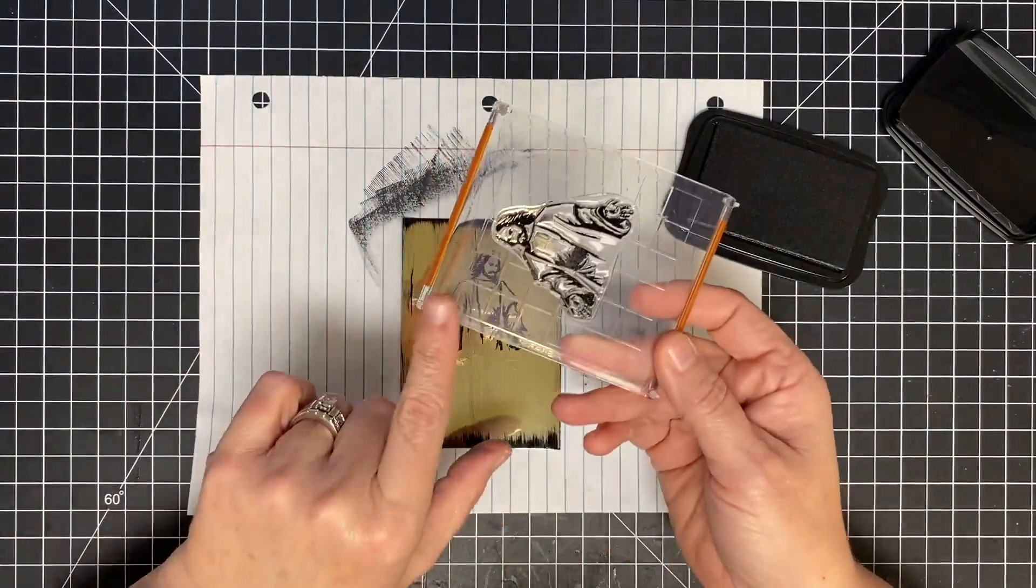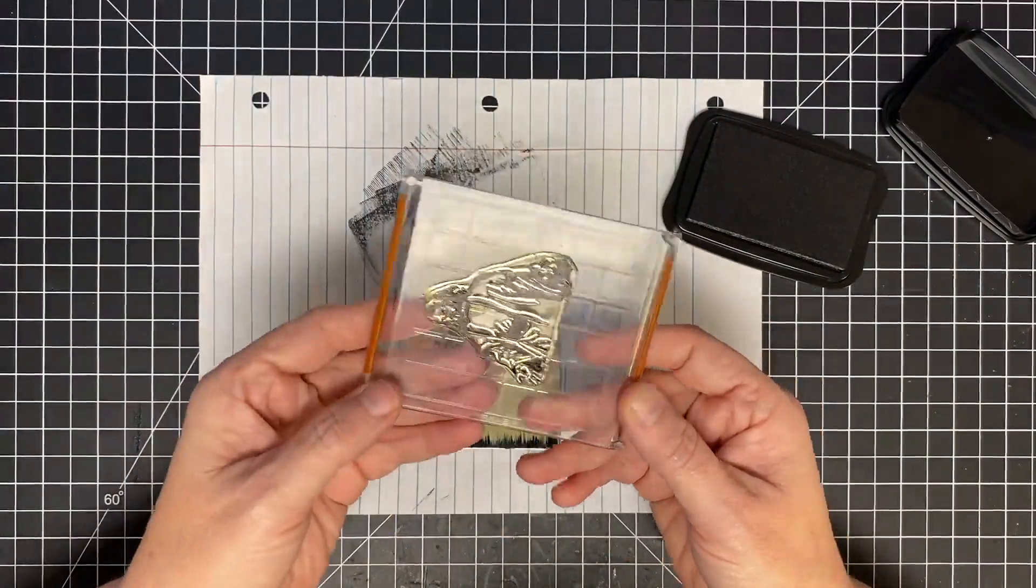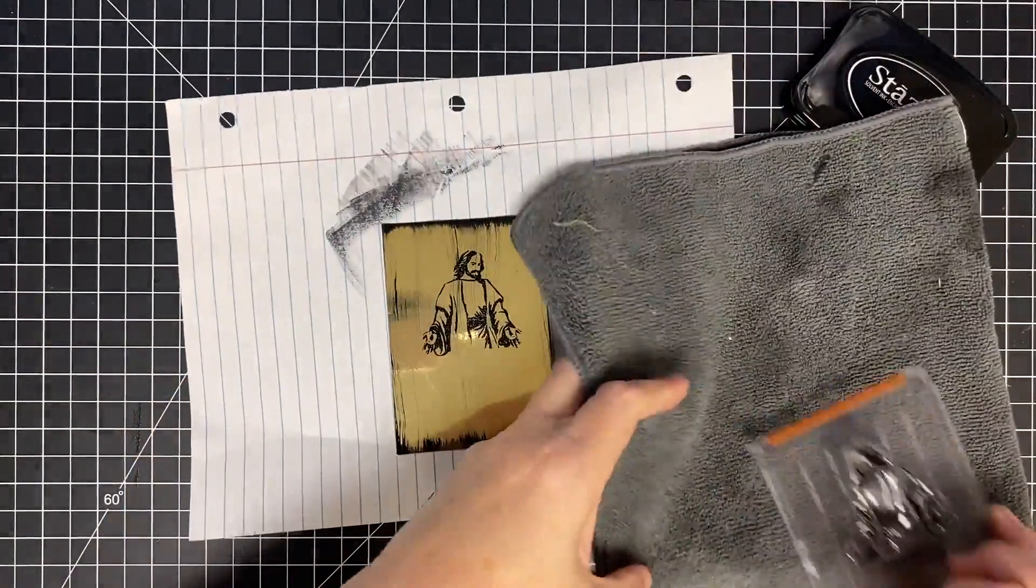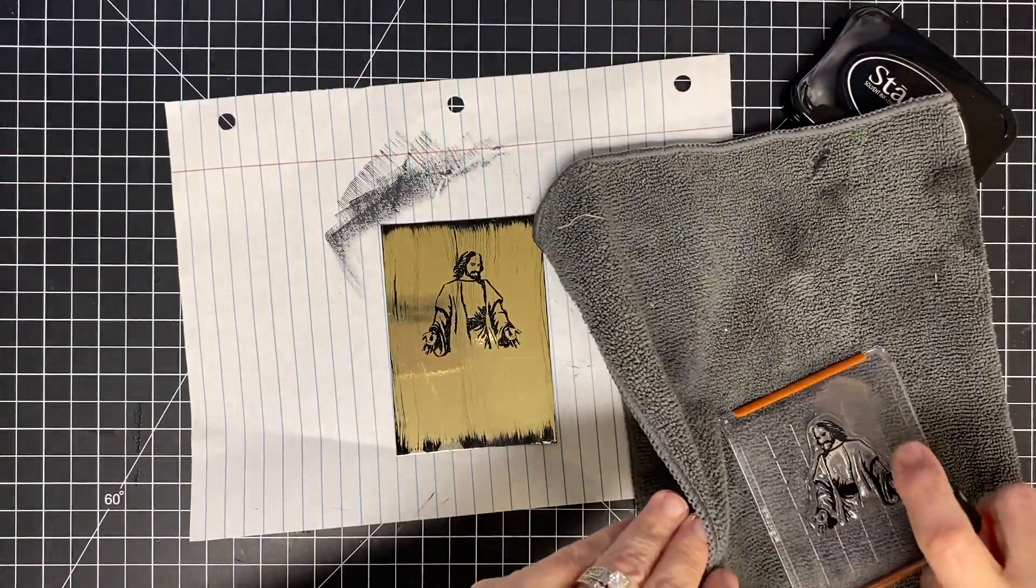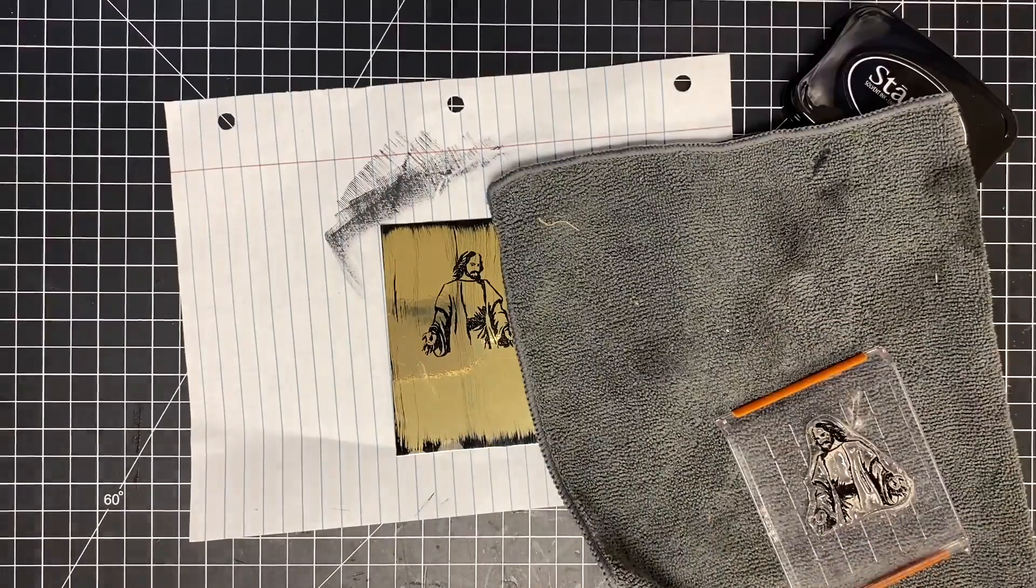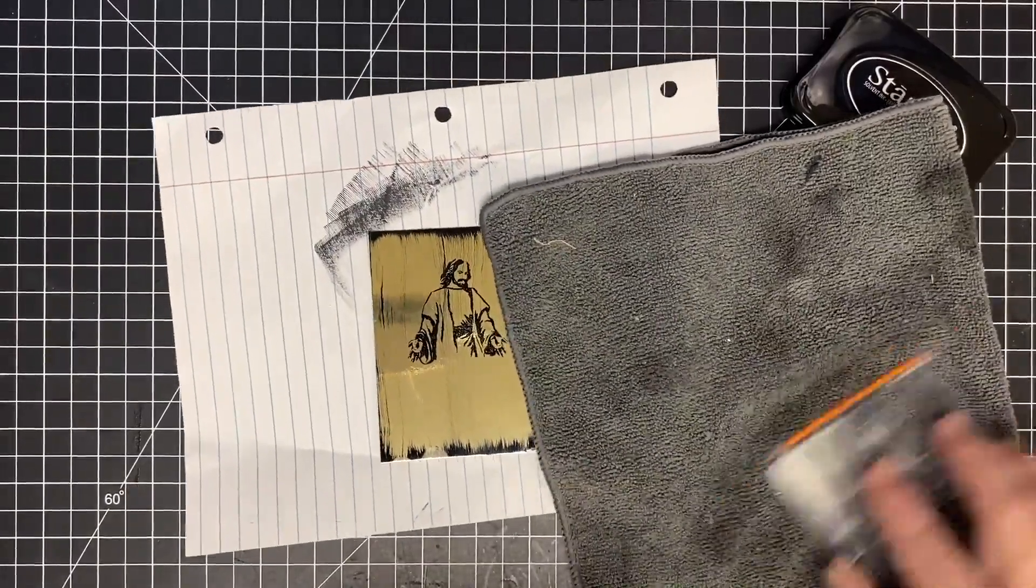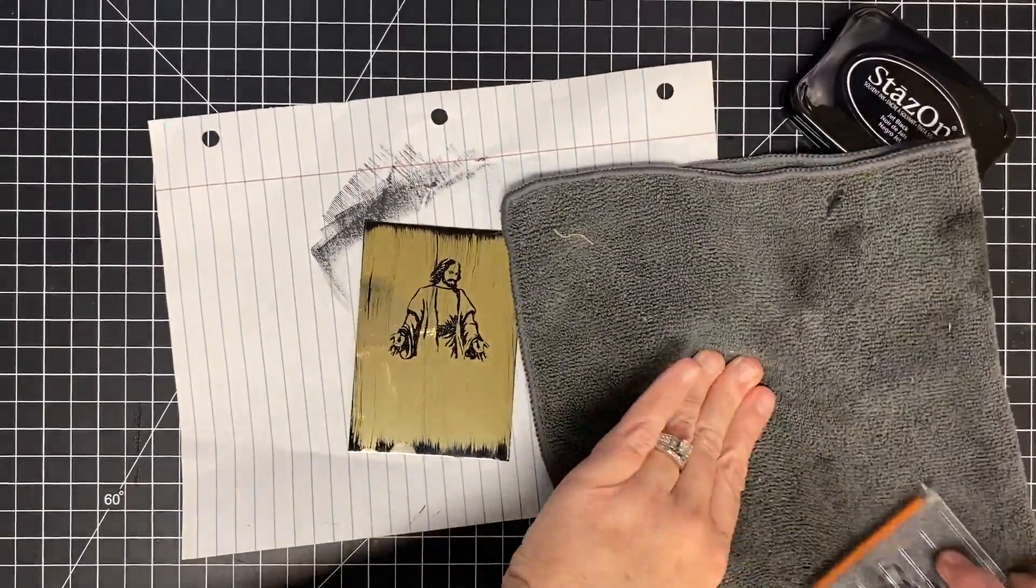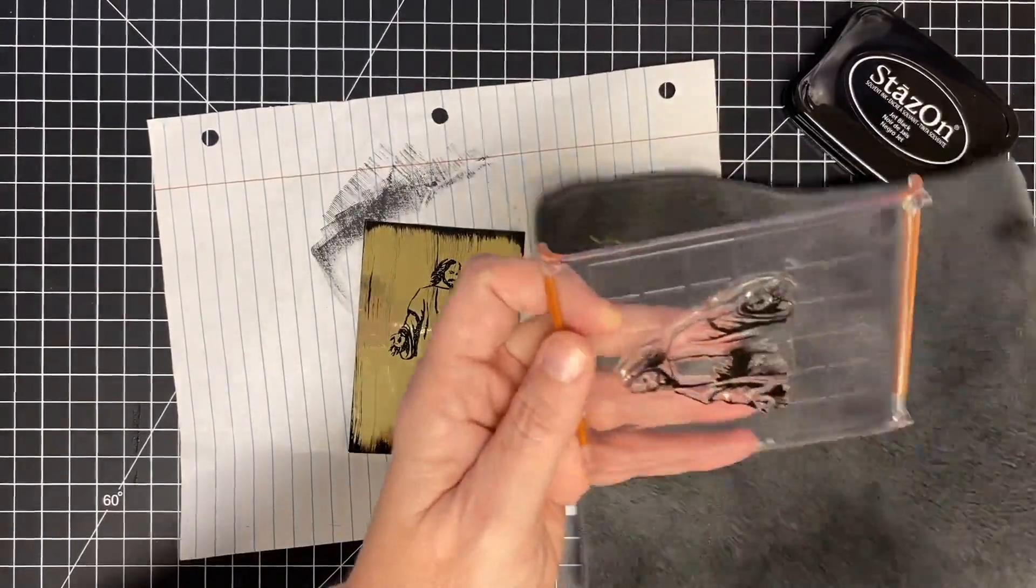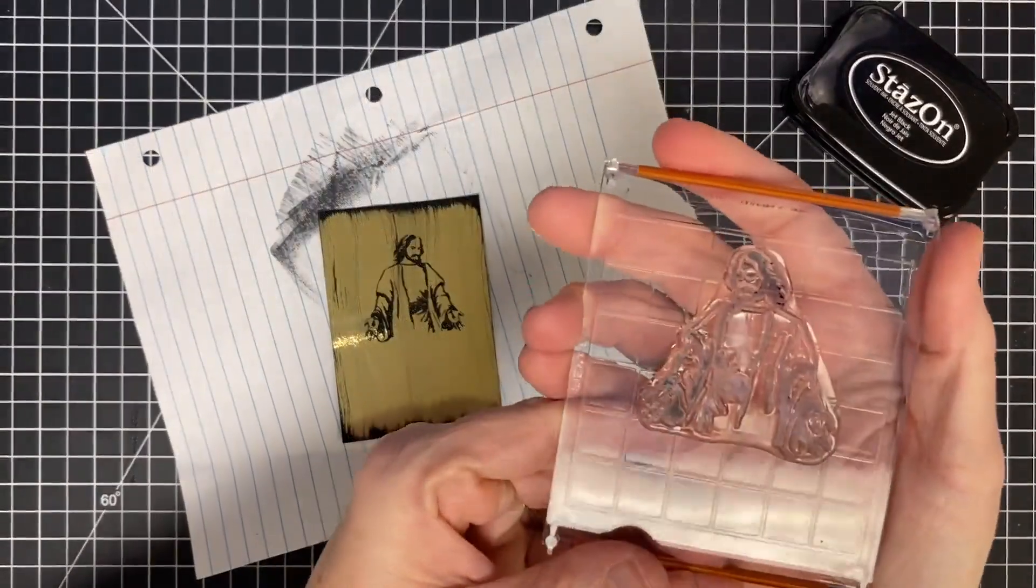Now with Stazon, you want to clean this right away. So I'm going to go ahead and clean this so it doesn't stain my stamp, although a stained stamp is a good stamp. And I know you're going to ask me how I'm cleaning it. I'm going to clean it with my Squeaky Clean. This is my Pumpkin Spice Squeaky Clean. It was the last one I purchased. I'm still using it, but you can use any of your Squeaky Cleans, and I'm just going to use this little cloth and clean it off.